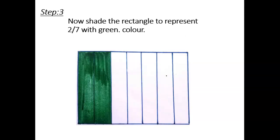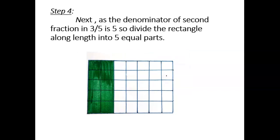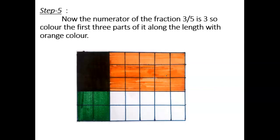Now the numerator of the second fraction, that is 3 by 5, is 3, so color the first 3 parts of it along the length with orange color. So here 6 boxes are common in both the shaded regions.